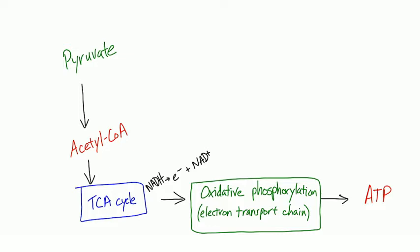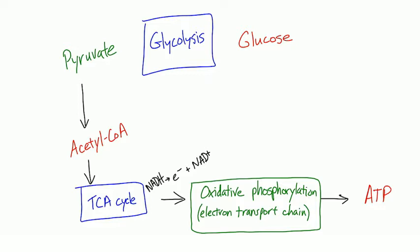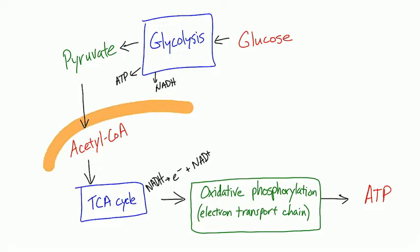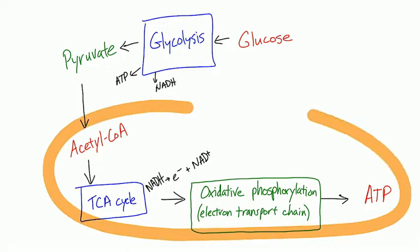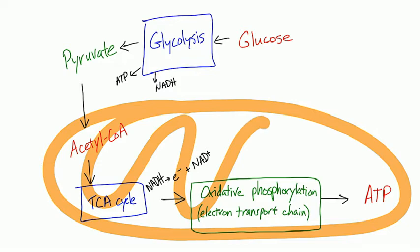Acetyl-CoA comes from the decarboxylation of pyruvate, and pyruvate is generated from glucose through glycolysis - that's going to be our focus for this video. Glycolysis also produces a tiny bit of ATP and NADH, but the problem is that glycolysis takes place in the cytosol, while the TCA cycle and electron transport chain take place in the mitochondria. NADH can't pass through the mitochondrial membrane, so there are shuttle mechanisms to move electron donors into the mitochondria.